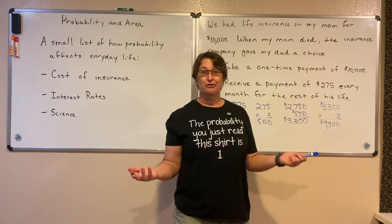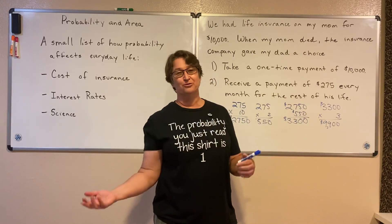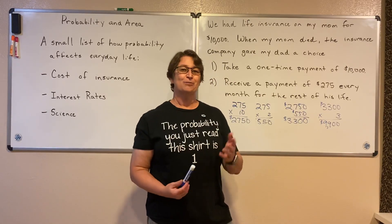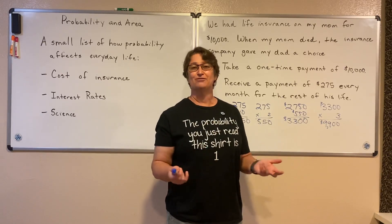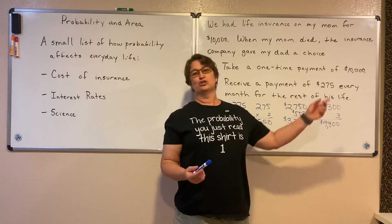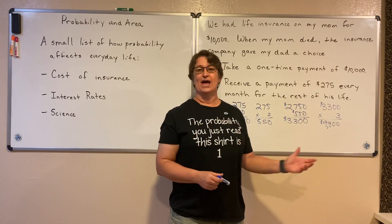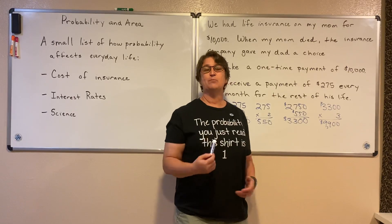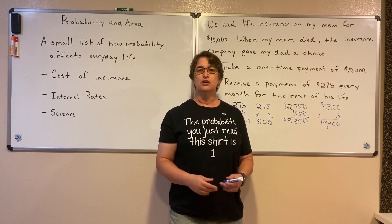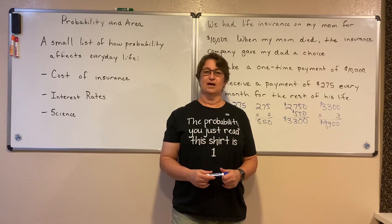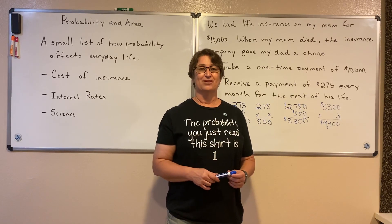Turns out that dad's lived more than three years — he beat the odds! So we could have made some money off of it. But using that probability that he should have died within three years, we just took that lump sum. Those are the types of decisions that insurance companies and people have to make all the time based upon probability. We're going to spend a little bit of time learning about probability. Math Made Simple at Simpson Math, thanks for watching.